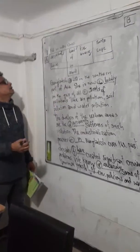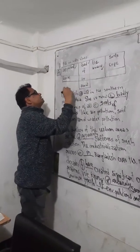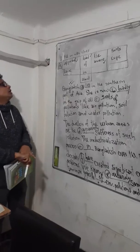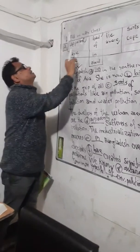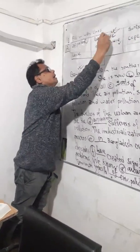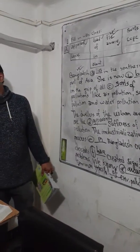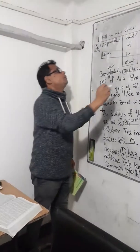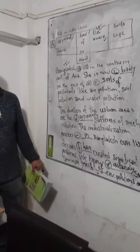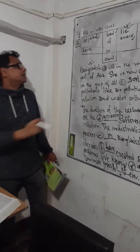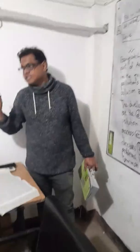Now notice how I fill the first gap: 'Bangladesh dash in the southern part of Asia.' Here we are finding the verb — the subject is Bangladesh, so we need a verb in this gap. 'Apparent' is adjective, 'bad' is adjective, 'lie' is a verb and may be placed here. Bangladesh is singular, third person, so in simple present tense we place 'lies.' Bangladesh lies in the southern part of Asia.